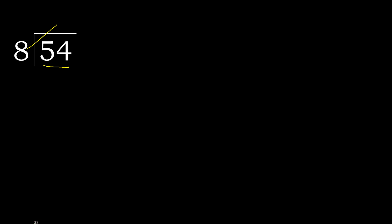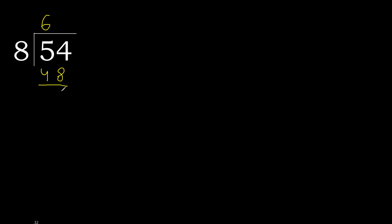8 multiplied by 7 is 56, which is greater. Multiplied by 6 is 48, which is not greater — ok. Subtract: 6. Next.